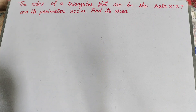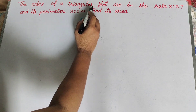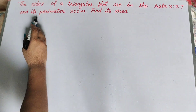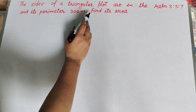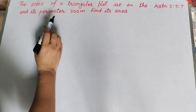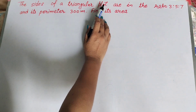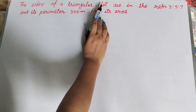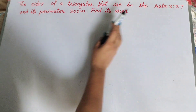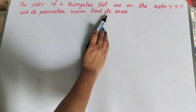Hello friends, welcome to my channel. In this video we discuss: the sides of a triangular plot are in the ratio 3:5:7 and its perimeter is 300 meters — find its area. The ratio of the sides of the plot is 3:5:7 and the perimeter is given as 300 meters.